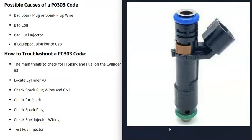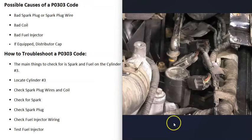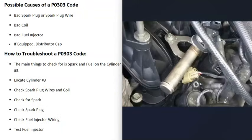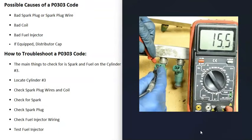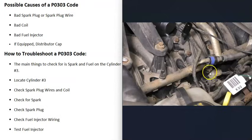If you are getting spark to the number three cylinder and the spark plugs are good, then the next thing that could cause this is something going on with the fuel injector on cylinder number three. There are different ways to troubleshoot this. On some vehicles they're easy to get to, so you can swap the cylinder three fuel injector with cylinder number two's fuel injector and see if the problem follows. On some vehicles you can also test the fuel injector with a multimeter to be sure that it's working.